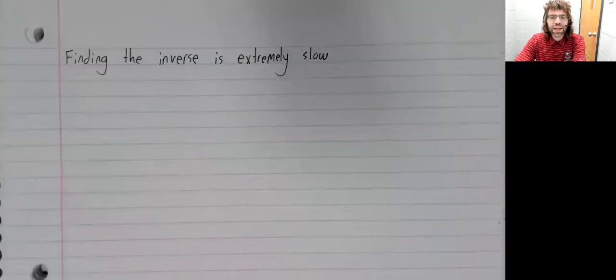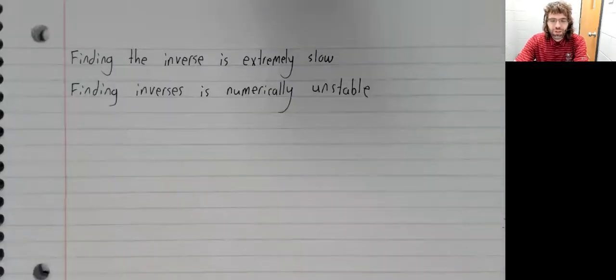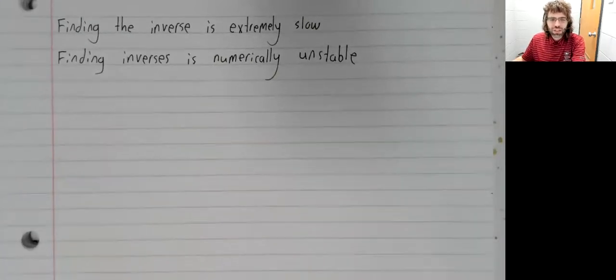But it gets worse than that. Finding inverses is a numerically unstable process. What does that mean?